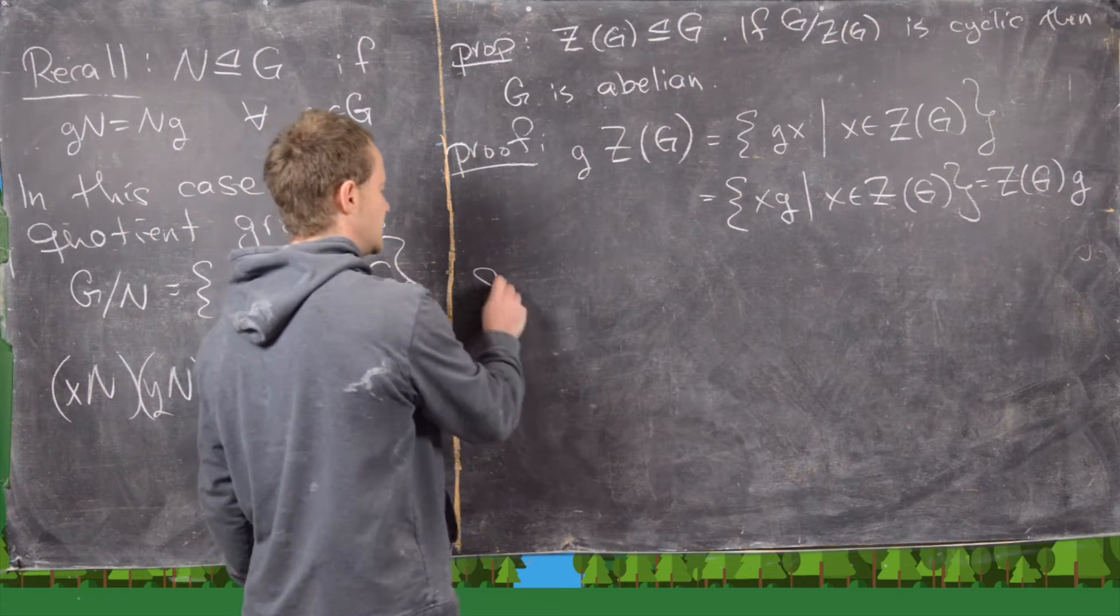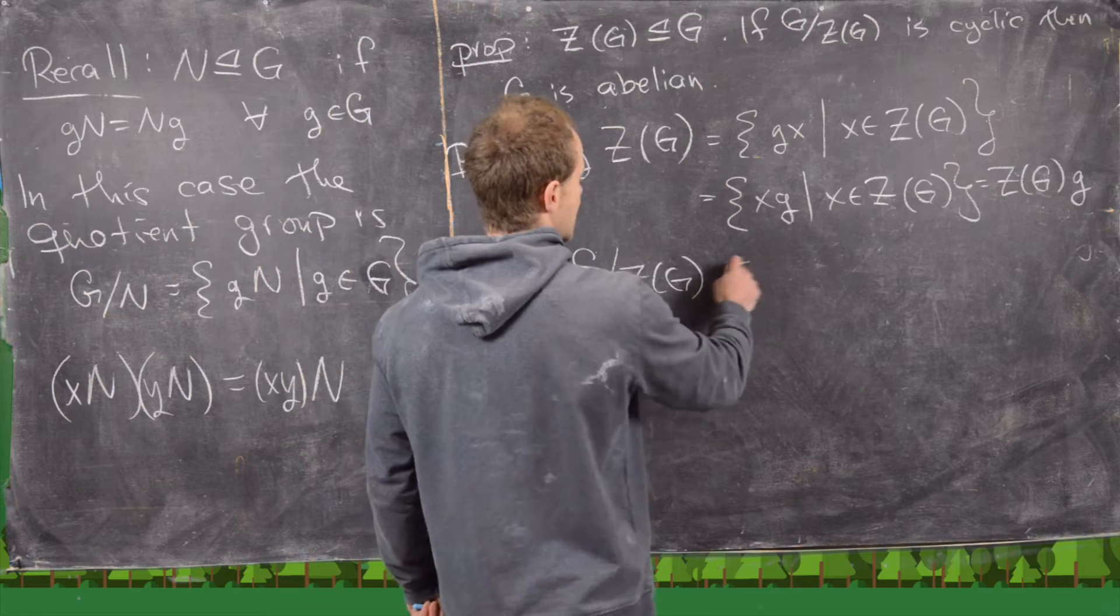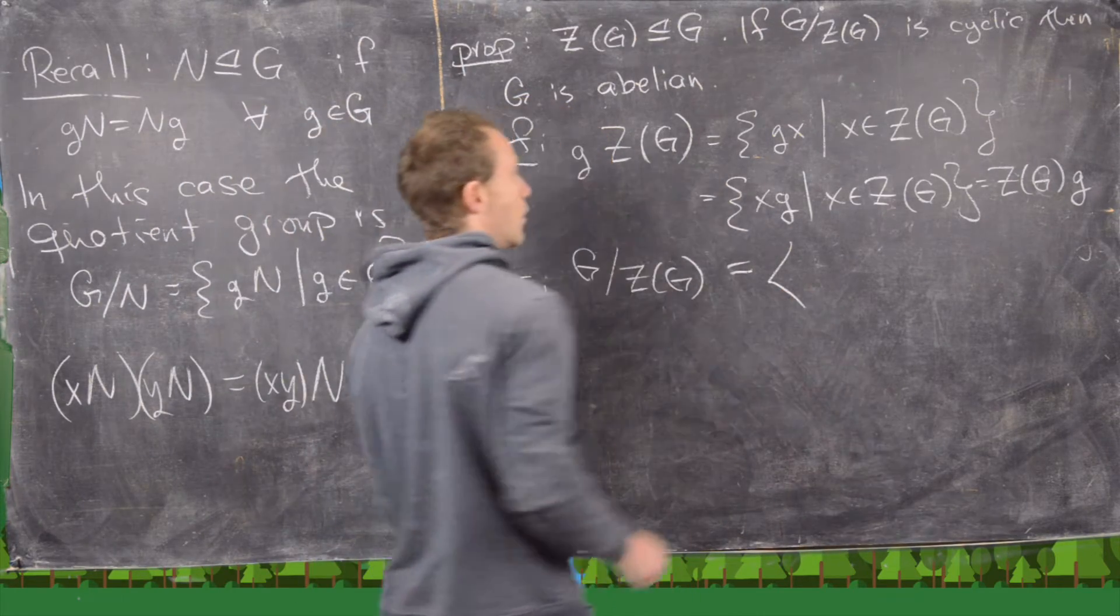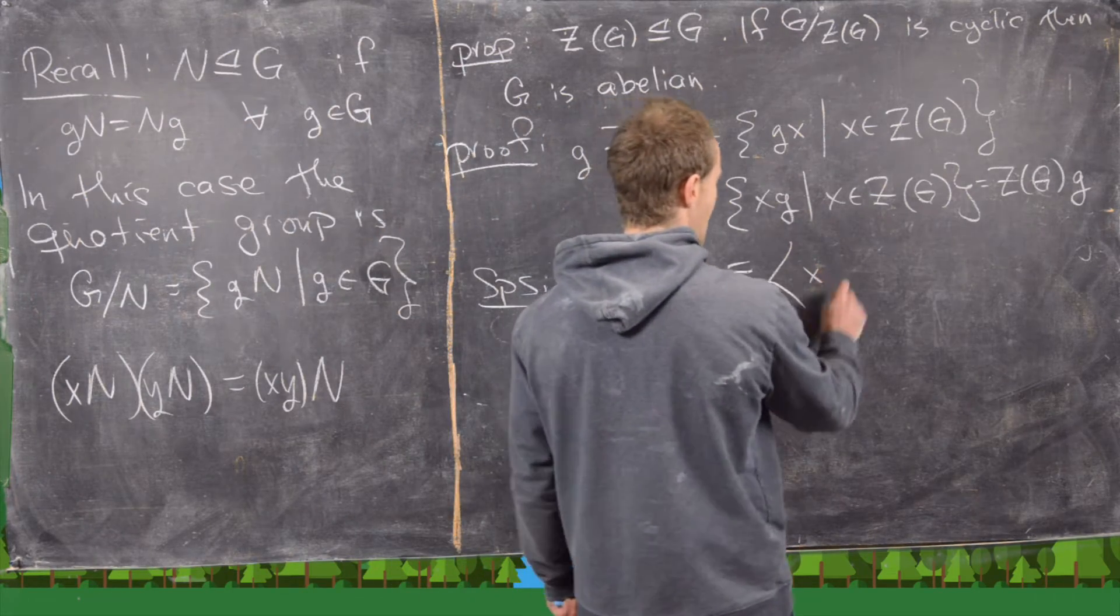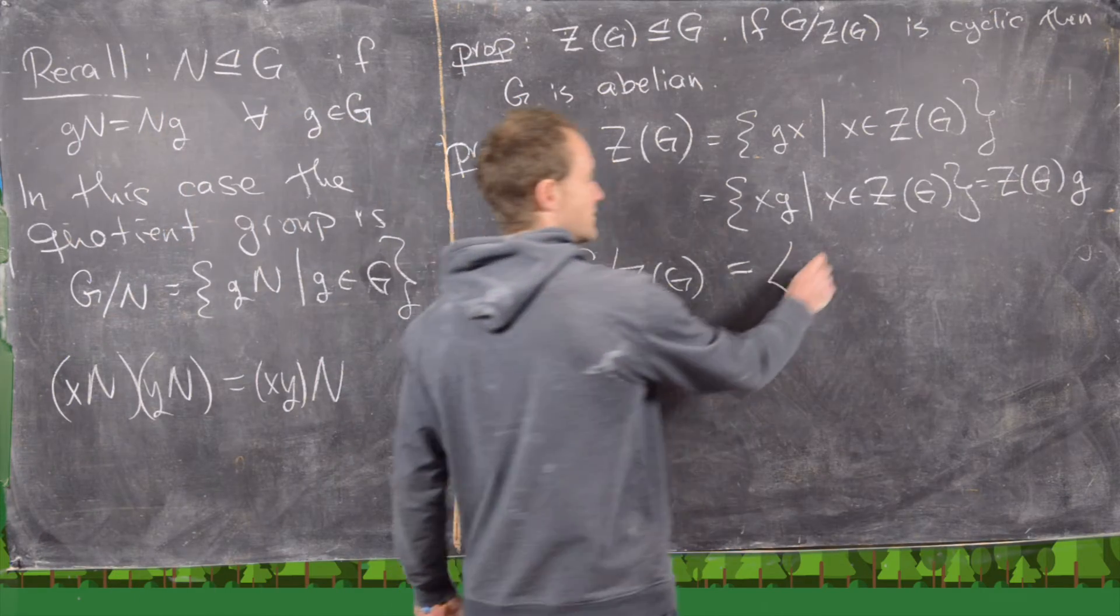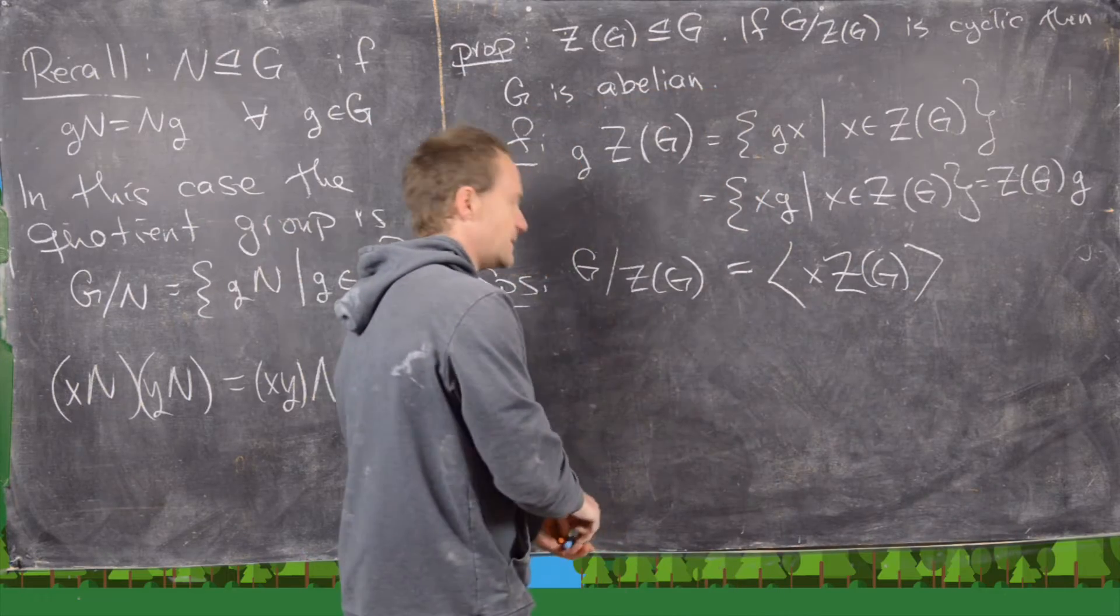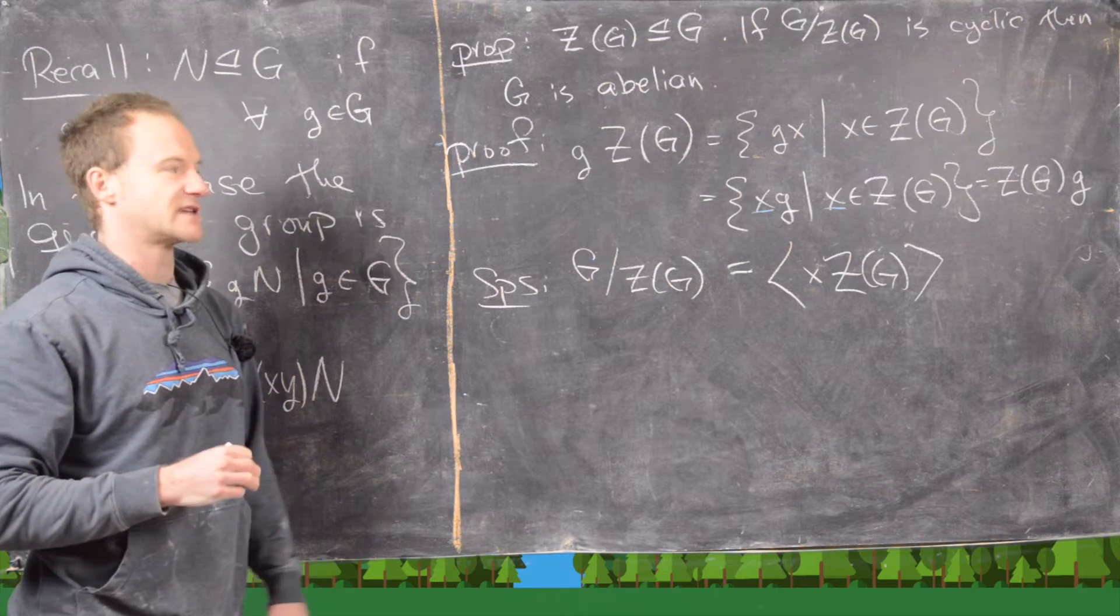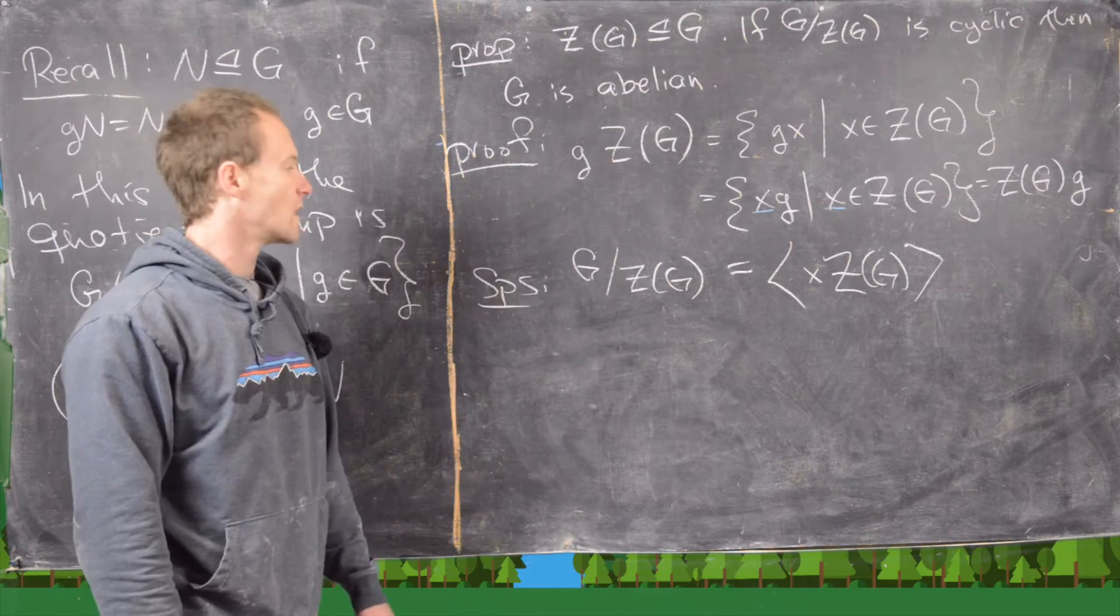And now the next thing we want to do is suppose that G mod Z(G) is cyclic. So that means it's generated by one element. Let's call that element X, but remember that elements from this are cosets. So maybe we'll call that X, Z(G). Not to be confused with this X up here, which was just a dummy variable inside the set builder notation. This is an actual generator.